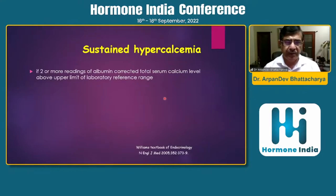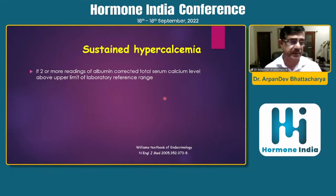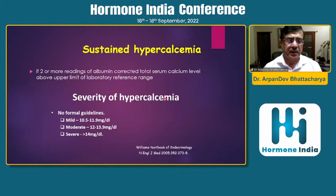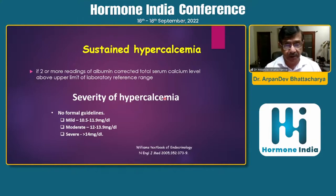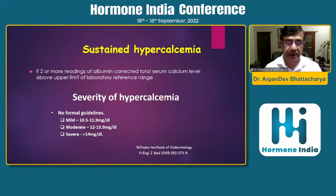To avoid misinterpreting a lab error as hypercalcemia, we need at least two samples to document it — rather than investigating different causes only to realize the initial value was a lab error. Roughly, we use levels of 12 and 14 as thresholds: less than 12, no need to panic; above 14 is severe — there can be cardiac rhythm disturbances requiring immediate action. Between 12 and 14 is moderate hypercalcemia.